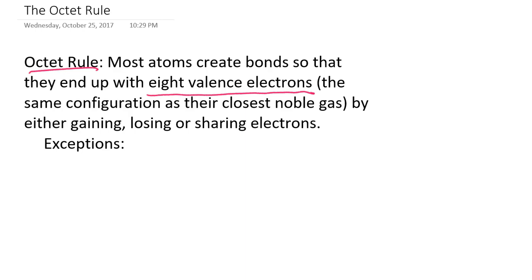Those atoms that have 8 valence electrons in their structure happen to be the noble gases. Atoms will try to end up with 8 valence electrons to take up the same configuration as their closest noble gas in the periodic table by either gaining, losing, or sharing electrons. This is true for most elements, but not all — there are certain exceptions to the octet rule.